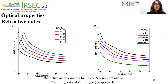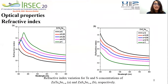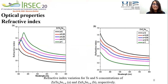The dielectric function allows us to estimate the optical properties such as the refractive index. For ZnTe-Se, the refractive index increases with Te concentration from 2.5 to 3 in the visible spectrum. For ZnS-Se, the refractive index decreases from 2.5 to 2.1 in the visible spectrum.